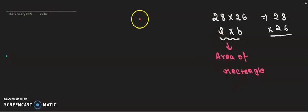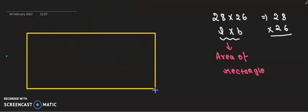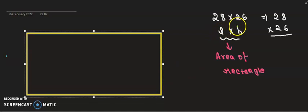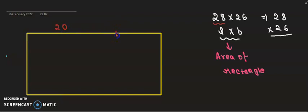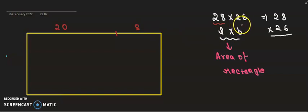Since we have the term rectangle, let us first draw a rectangle whose length is 28 and breadth is 26. Normally we take the higher value as length and the smaller value as breadth. So length is 28, which I can also write as 20 plus 8 — 20 for this part and 8 for this part. And breadth is 26, which we write as 20 and 6.